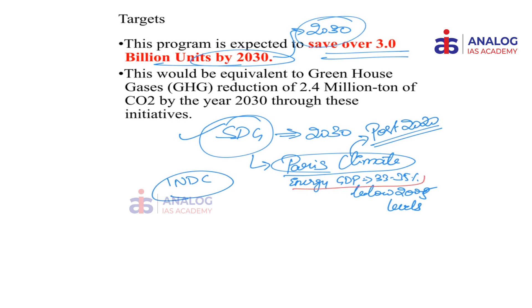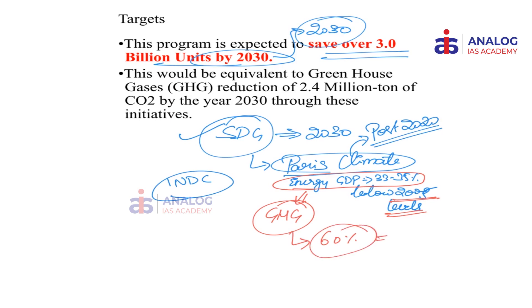One of India's commitments in the Paris Climate Agreement is to reduce energy intensity of GDP by 33 to 35 percent from 2005 levels. We are essentially talking about reduction of greenhouse gas emissions by 33 to 35 percent. Energy efficiency is one way to achieve this, since more than 60 percent of power produced in India is through coal. This program aims to reduce greenhouse gas emissions by at least 2.4 million tonnes of carbon dioxide by the year 2030, aligned with achieving the Sustainable Development Goals.